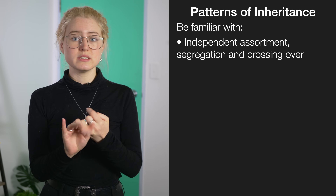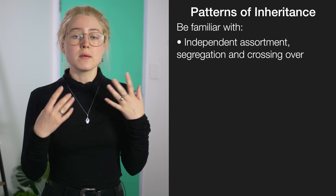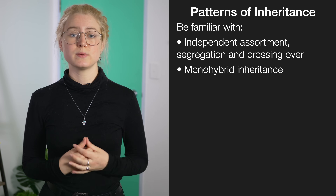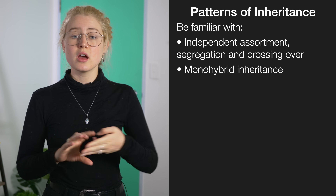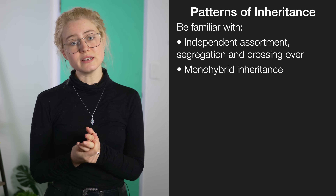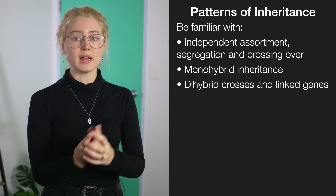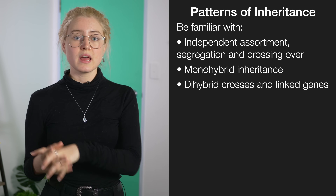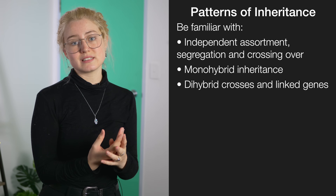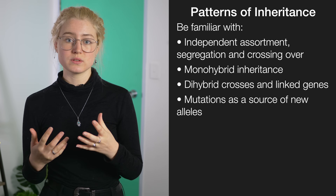So patterns of inheritance — this is almost always the first section, and this overarching topic has a bunch of things inside of it. So this includes things like independent assortment, segregation, crossing over, monohybrid inheritance, and with this we have to take into consideration things like co-dominance, incomplete dominance, multiple alleles and lethal alleles. And then there's also dihybrid crosses, and with this you have to bear in mind the idea of linked genes. And lastly, mutations as a new source of alleles.